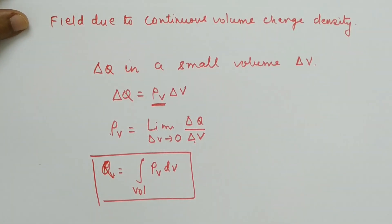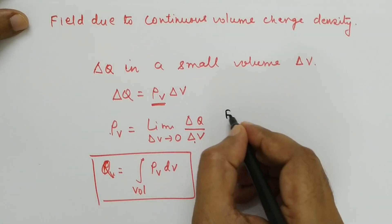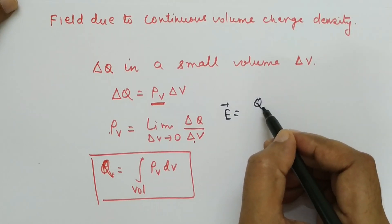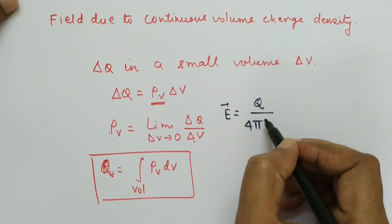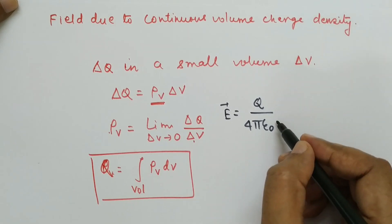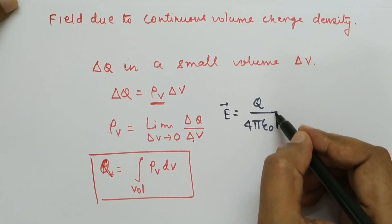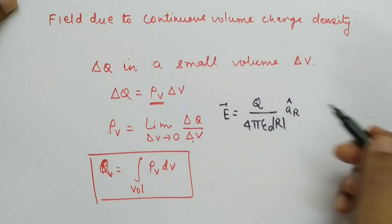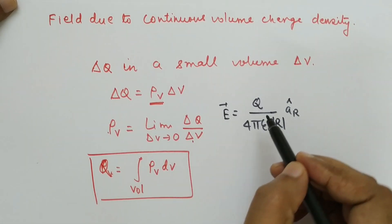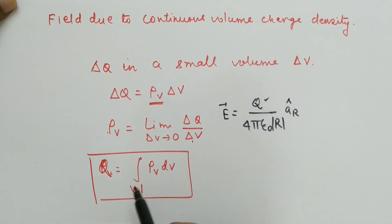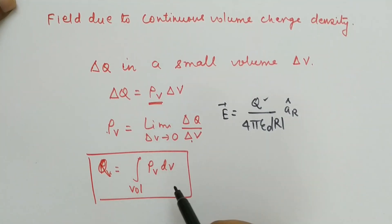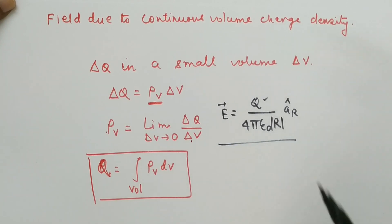The electric field intensity formula is E = Q / (4πε₀ r²). In the case of volume charge density, we substitute Q with the volume integral of ρv dv to find the electric field due to a uniform volume charge distribution. Thank you.